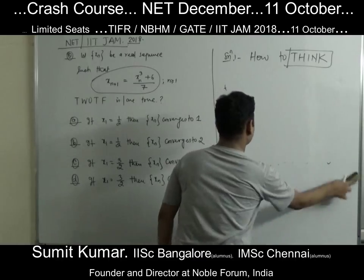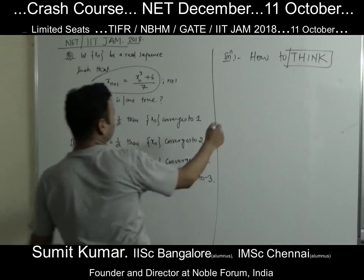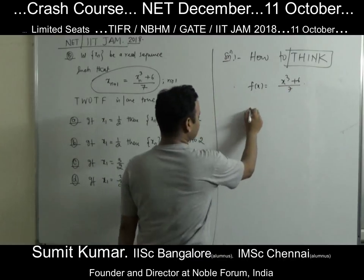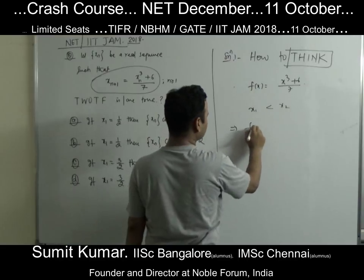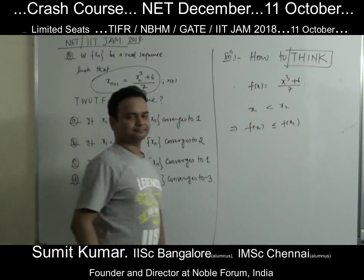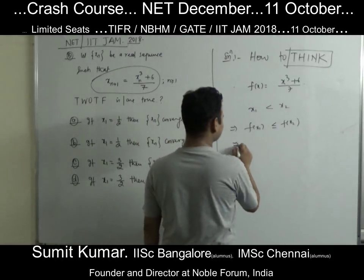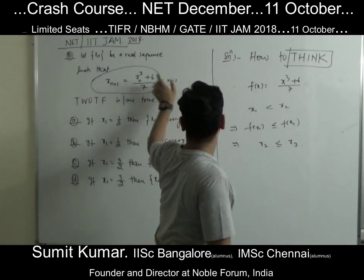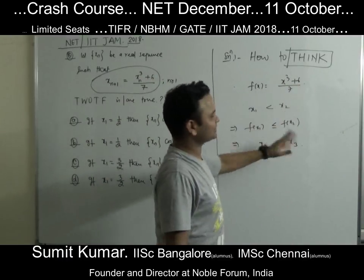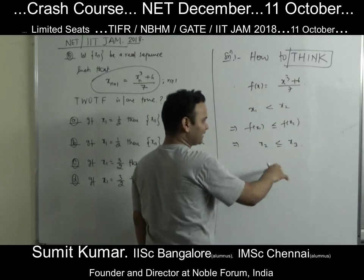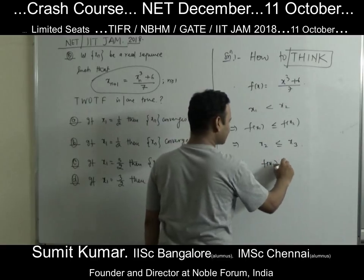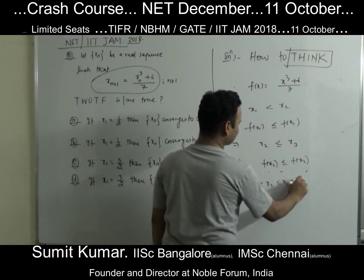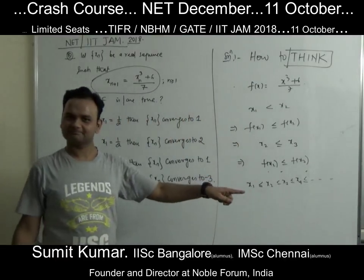Since the function f(x) = (x³+6)/7 is monotone increasing and X2 > X1, applying f again gives f(X2) > f(X1), meaning X3 > X2. And so on. Therefore X1 ≤ X2 ≤ X3 ≤ X4 and so on — the sequence is monotone increasing.